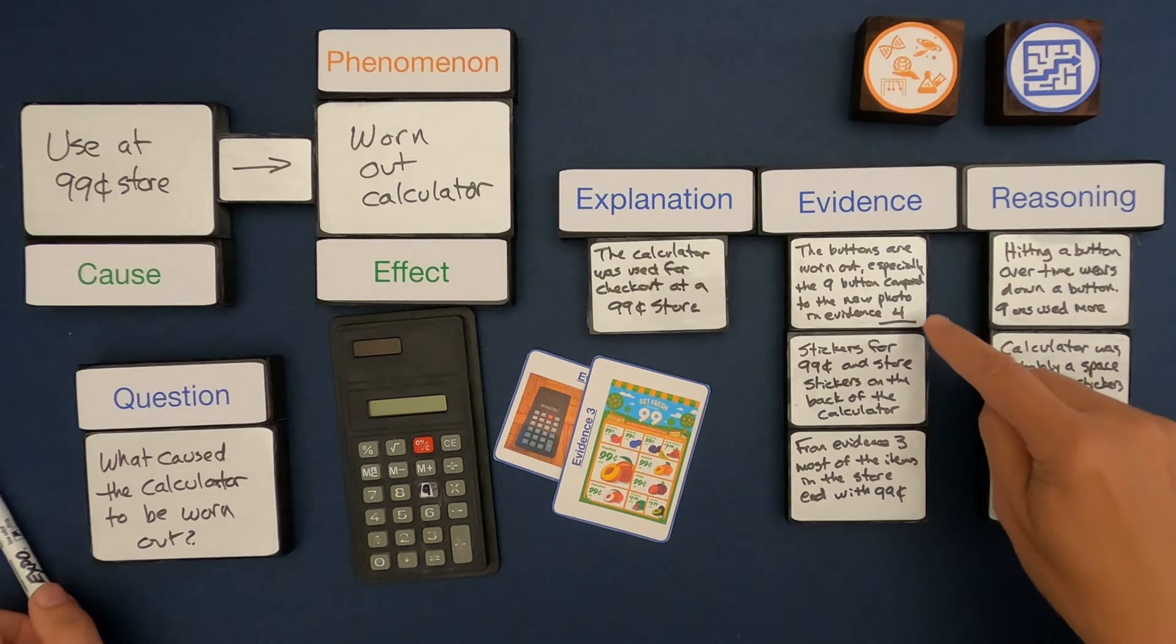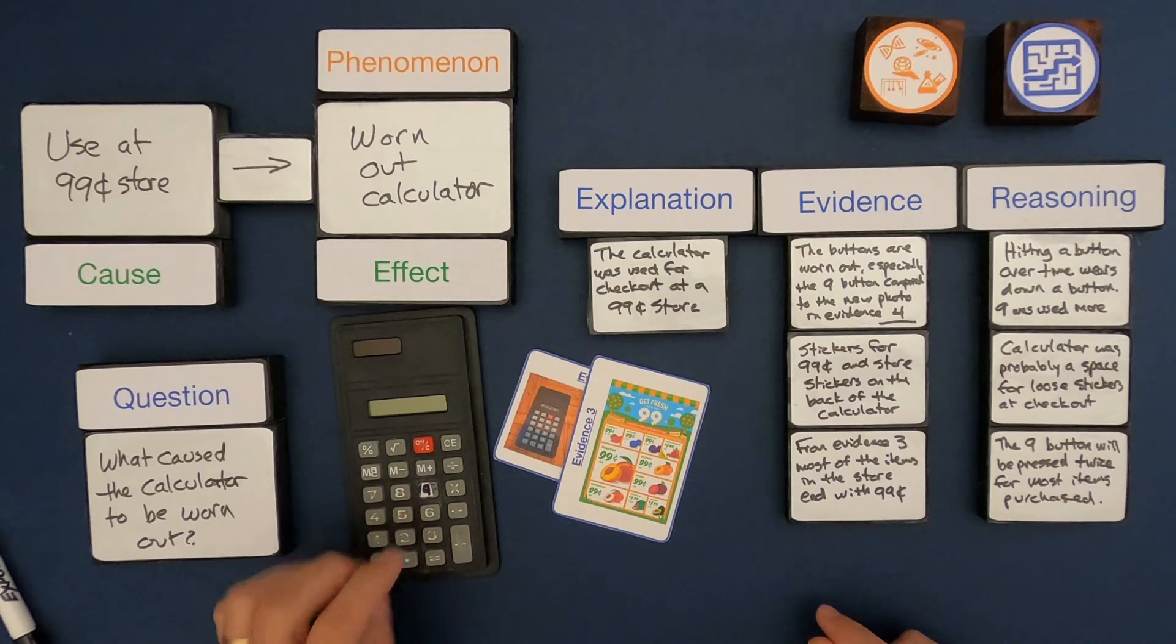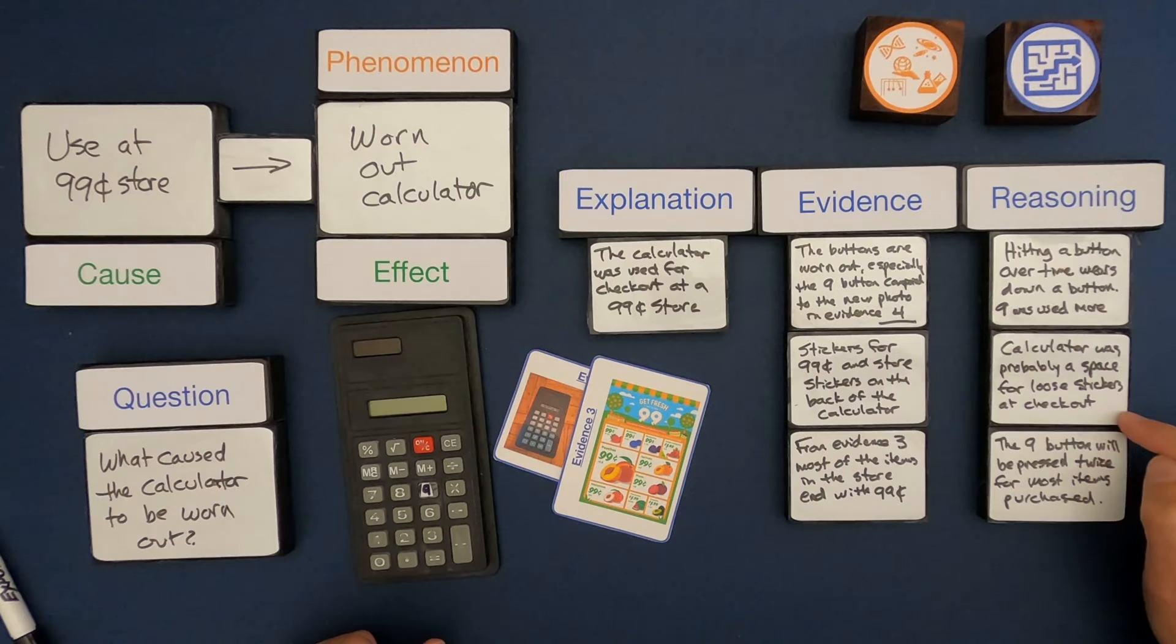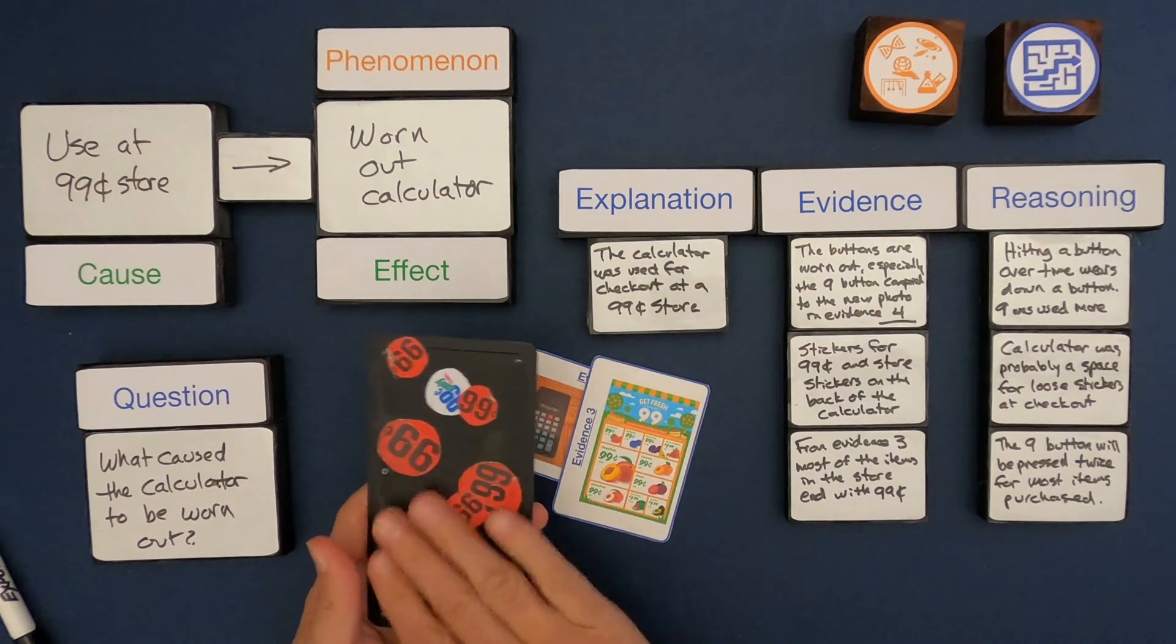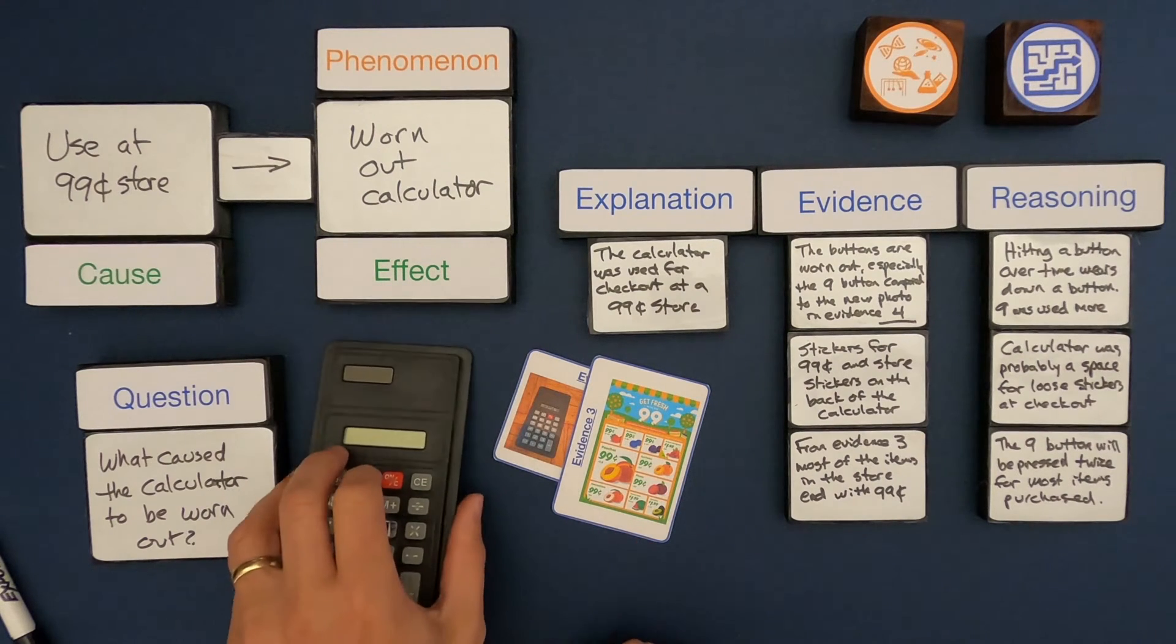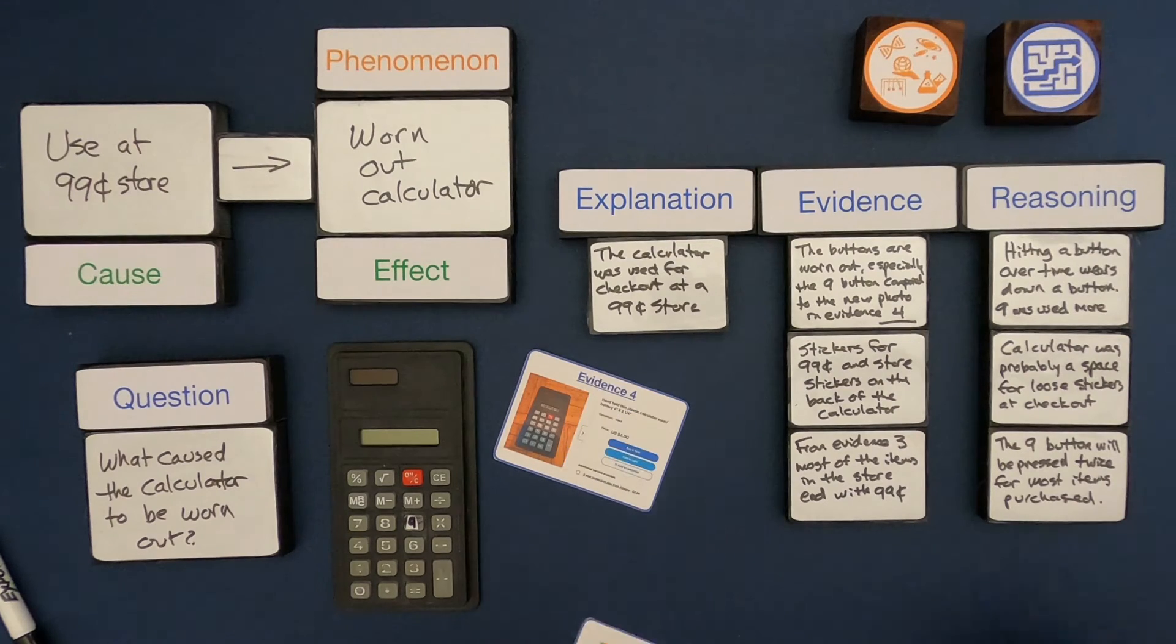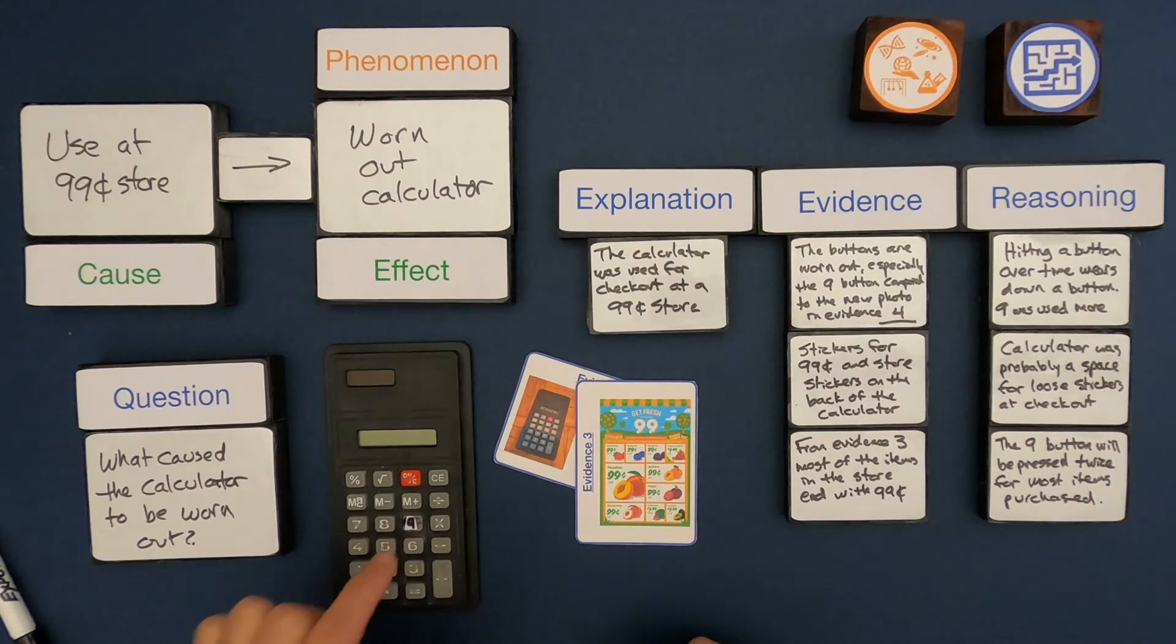My reasoning: I think the buttons are worn because when you hit a button over time it starts to wear down on the paint on the top, especially the 9. The next one, why are the stickers important? I think the calculator was probably just around, and so it's a space where loose stickers could get stuck to it during checkout, or maybe the checkout person actually stuck them on the back. And then the last one, the 9 button will be pressed twice for most items purchased. Since they all cost 99 cents, each time you check it out you're going to have to hit at least the 99 twice, so it's going to get worn over time. So this is evidence-based reasoning.